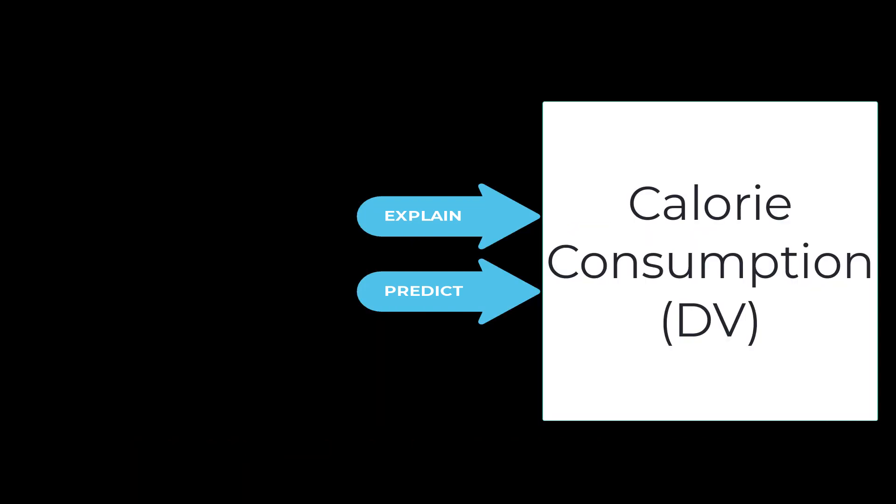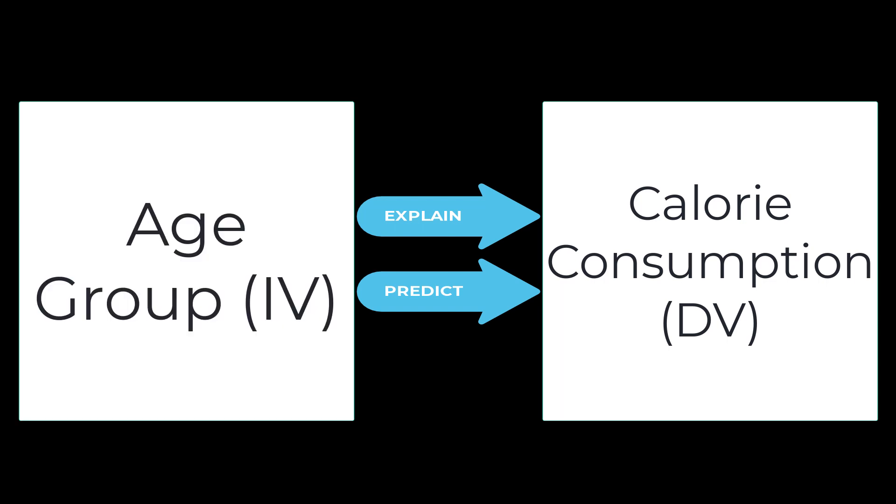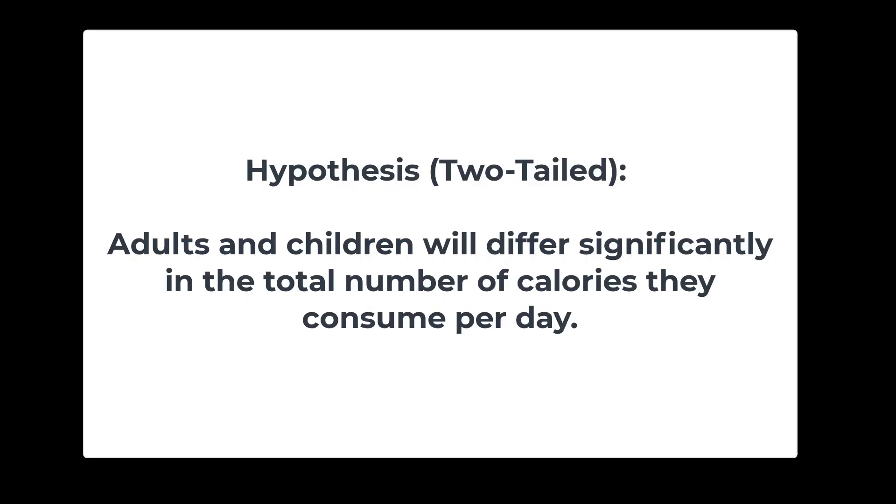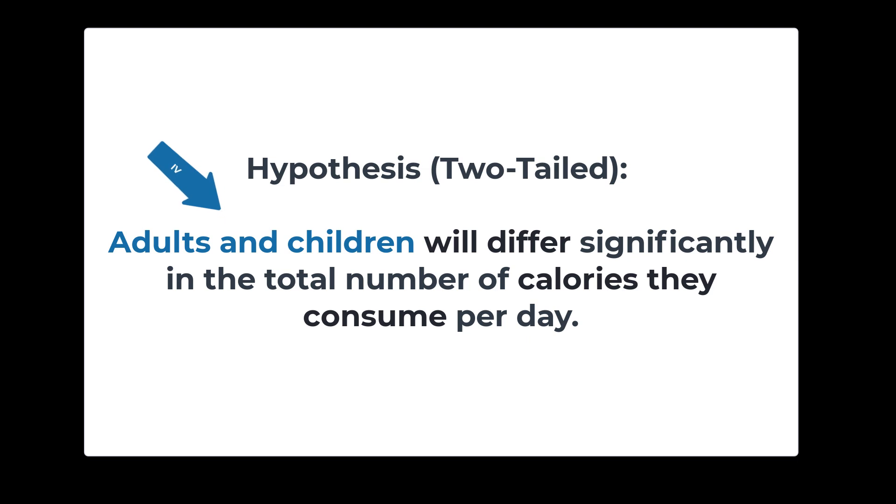Let's say you had the belief that there was a significant difference in calorie consumption between someone who was an adult and someone who was a child. If we were to write a two-tailed hypothesis, we might suggest that adults and children will differ significantly in the total number of calories they consume per day. By definition, we know this hypothesis expresses the researcher's prediction about the relationship between the independent variable and the dependent variable. The dependent variable is calorie consumption per day. The independent variable is age group, adults versus children.